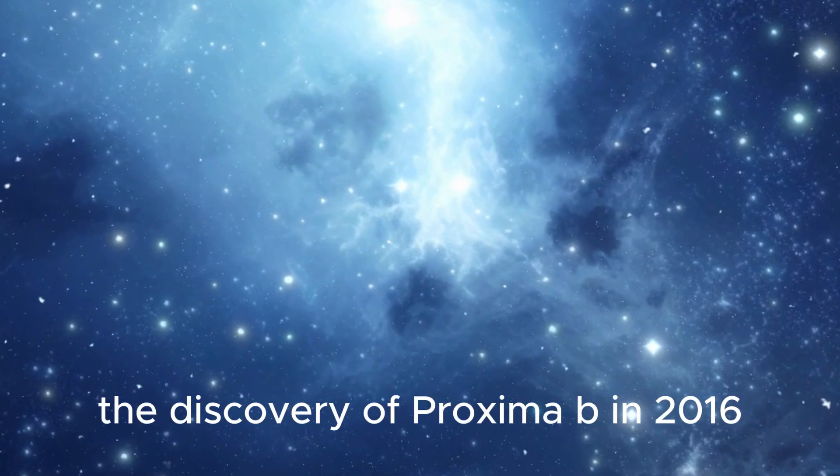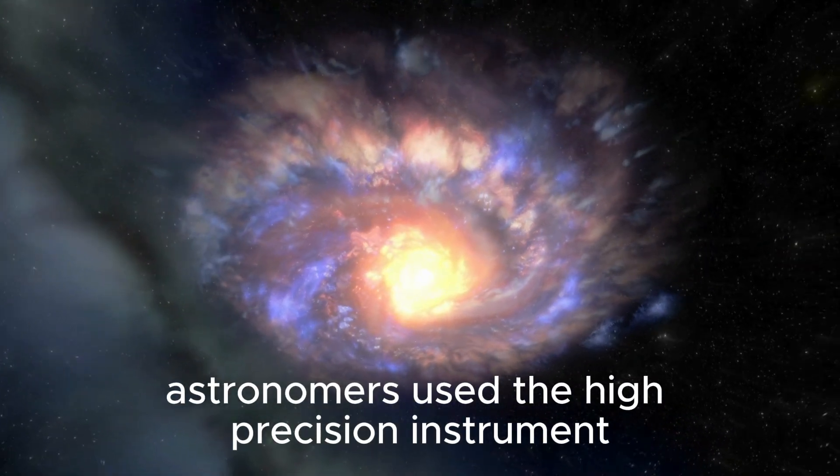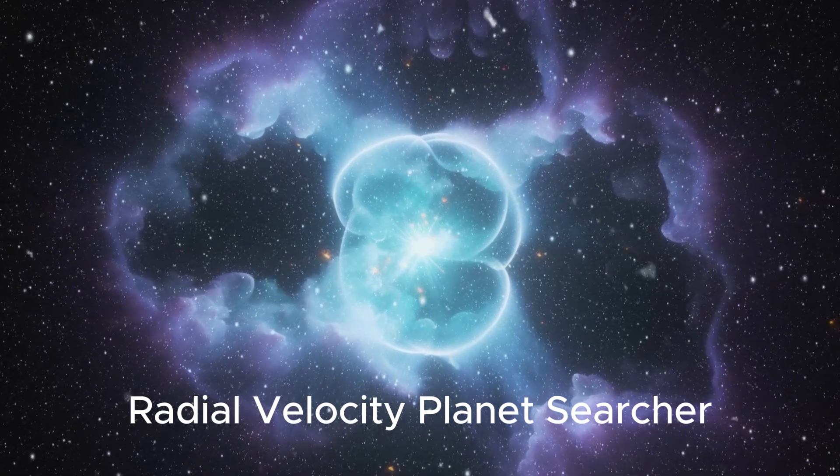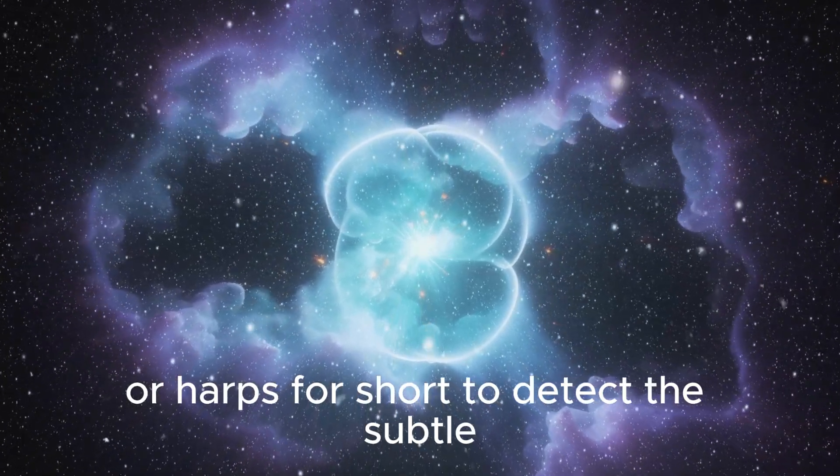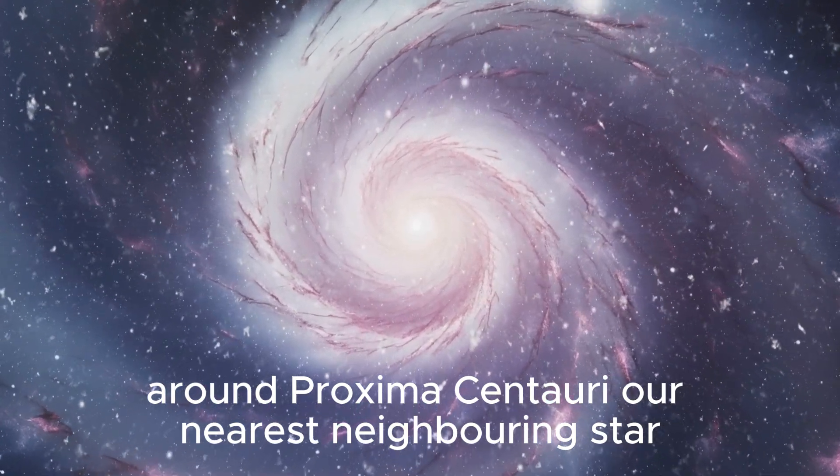The discovery of Proxima b in 2016 was a remarkable achievement. Astronomers used the high-precision instrument called the High Accuracy Radial Velocity Planet Searcher, or HARPS for short, to detect the subtle gravitational tug of an exoplanet around Proxima Centauri, our nearest neighboring star.